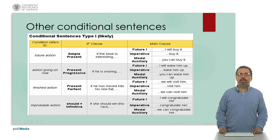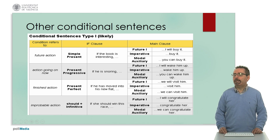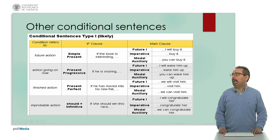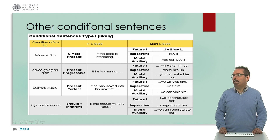There are also more complex structures and types of conditionals, summarized here and in the following slide. The condition can refer to a future action — in this case we use simple present — for example: 'If the book is interesting, I will buy it' or 'buy it' or 'you can buy it', using a future, an imperative, or a modal auxiliary. It can also refer to an action going on at the moment — in this case we use present progressive: 'If he is snoring, I will wake him up' or 'wake him up' or 'you can wake him up.'